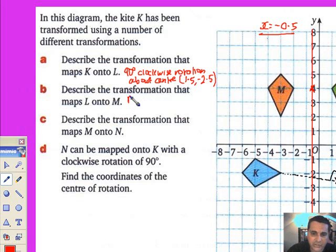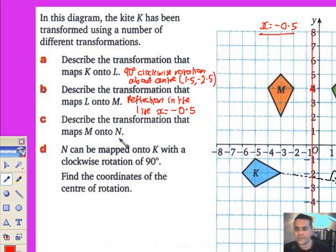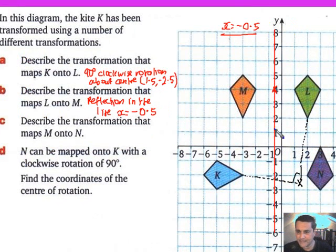You get a mark for saying the word reflection, and you need to say which line: reflection in the line x equals minus 0.5. Describe the transformation that maps M onto N. This is quite difficult. I think it's up the y-axis. Let me just check the answer.